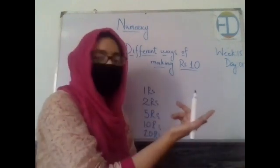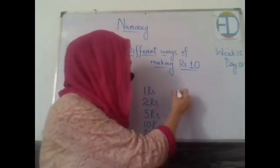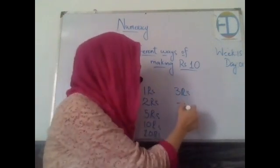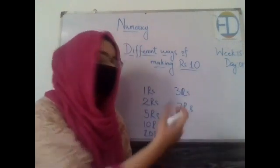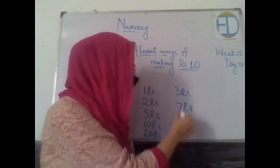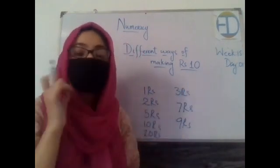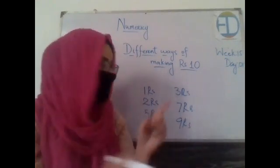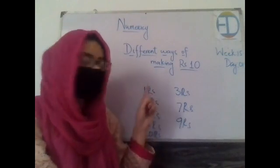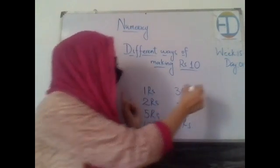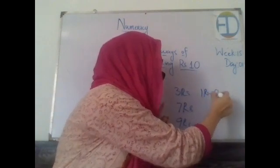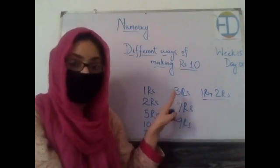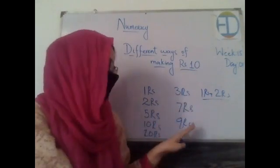What should we do if I want to buy something that costs three rupees, or seven rupees, or nine rupees, but we don't have a coin or note for that amount? We make a combination. If I want to buy something for three rupees, I can take one coin of one rupee plus one coin of two rupees — two plus one equals three.